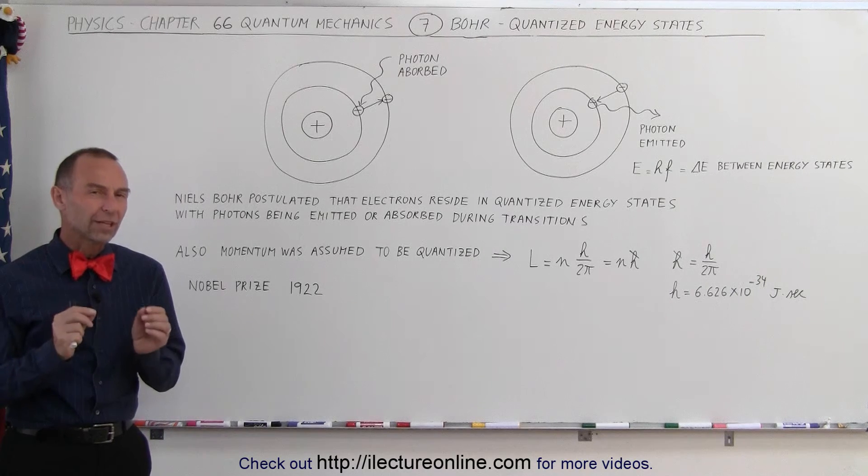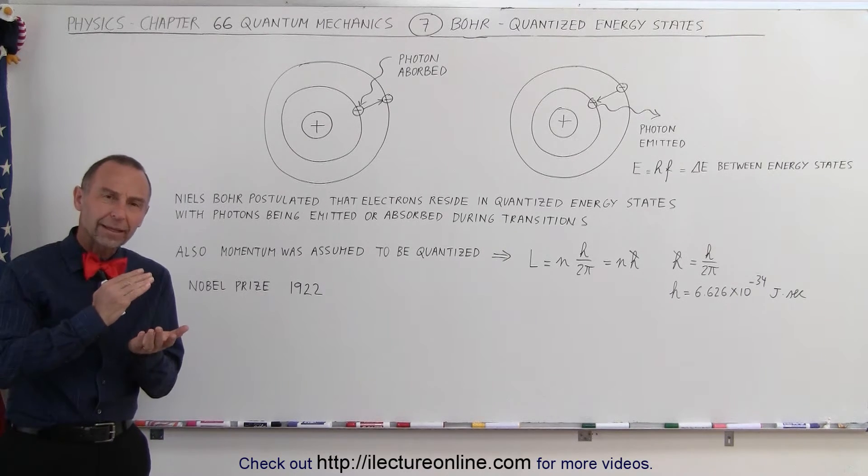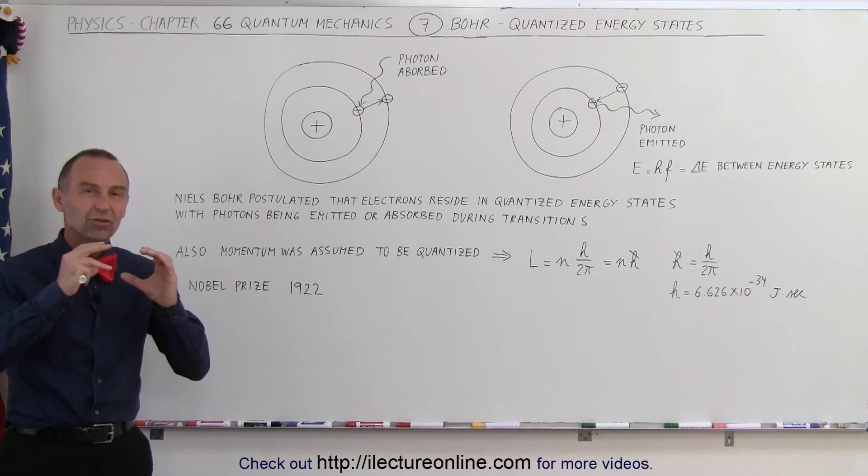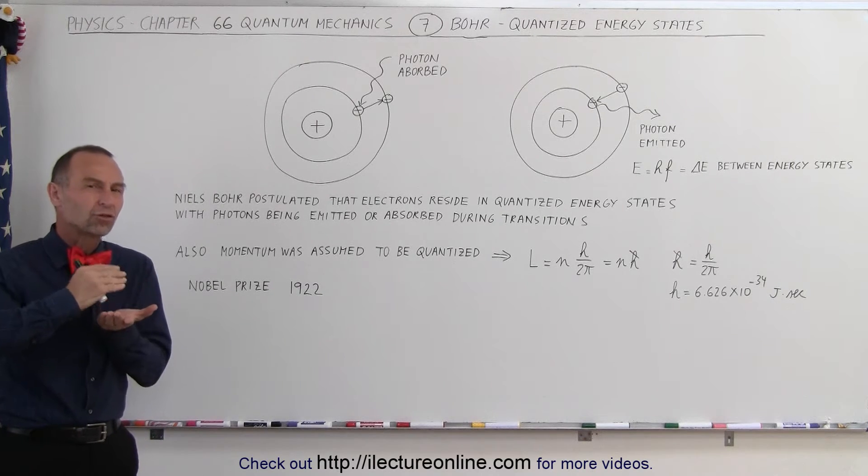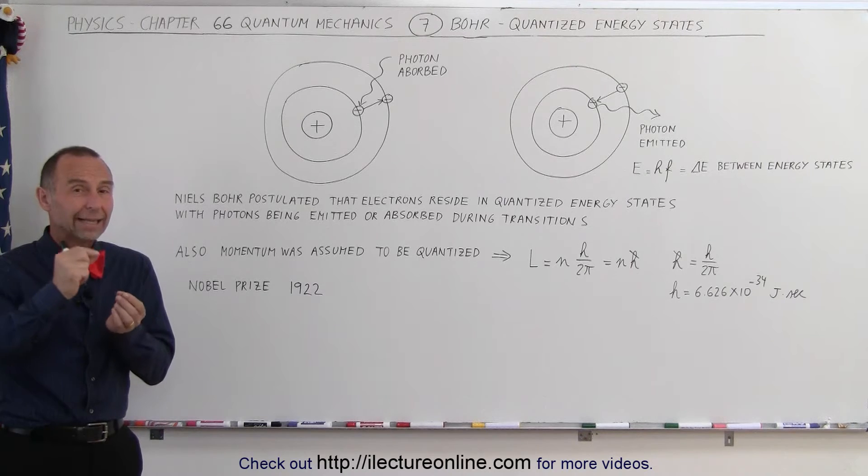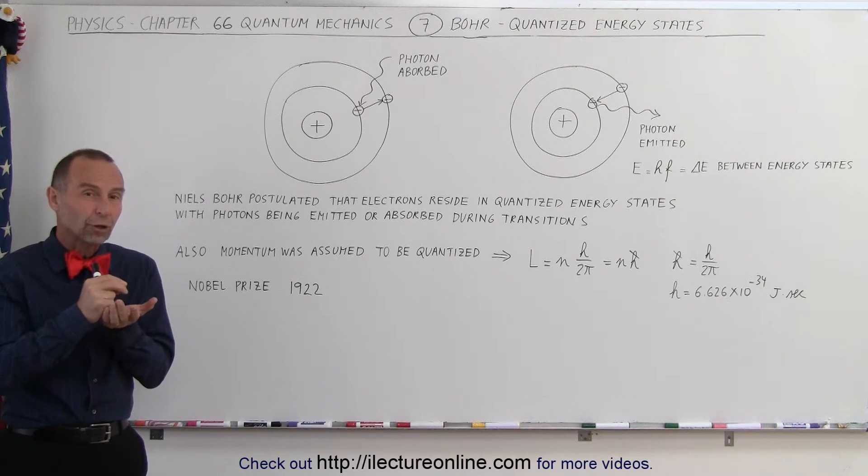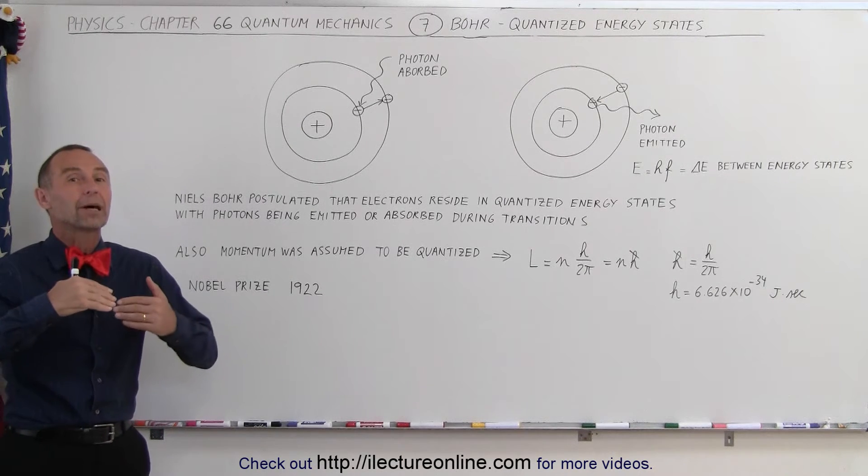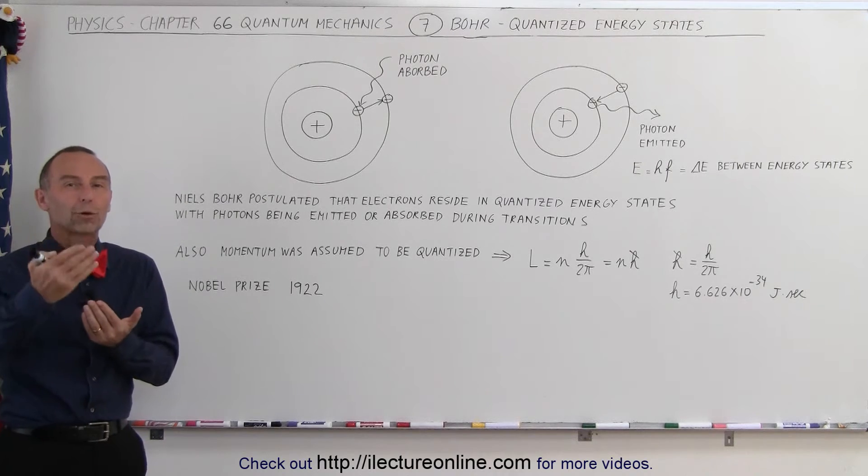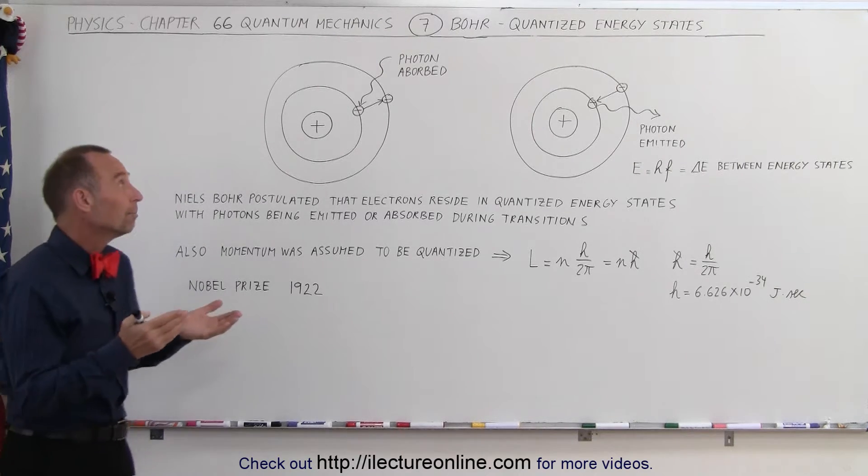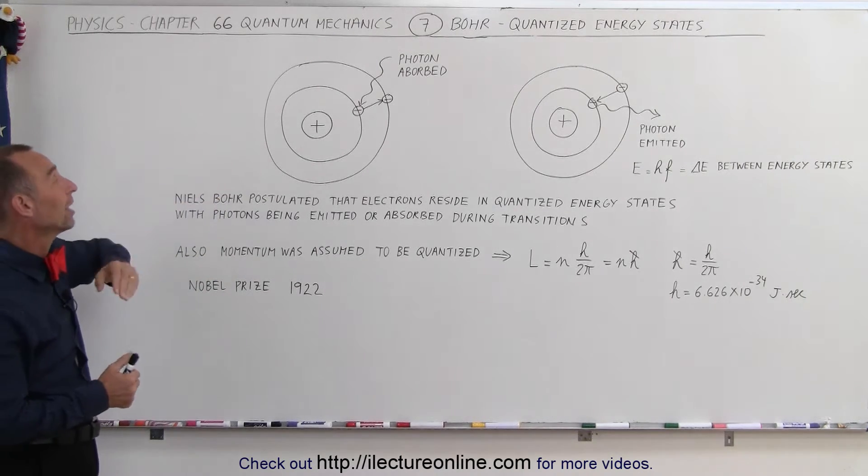The result of that was that he postulated that electrons resided in energy levels that were quantized. When electrons jumped from one level to another level, either a photon was absorbed or emitted, depending upon if the electron was in a higher or lower energy state.